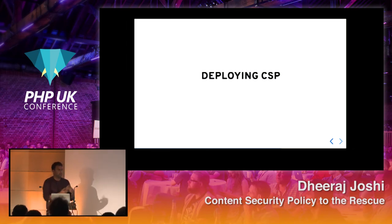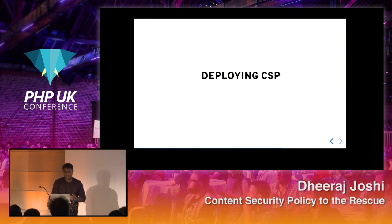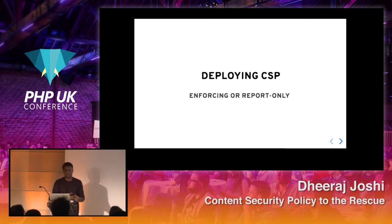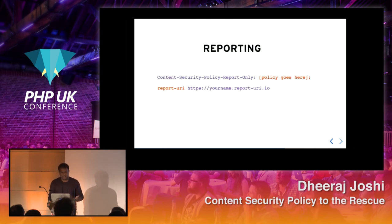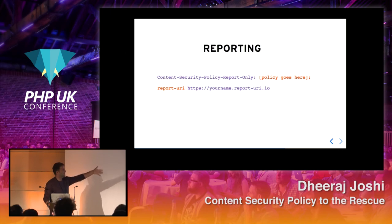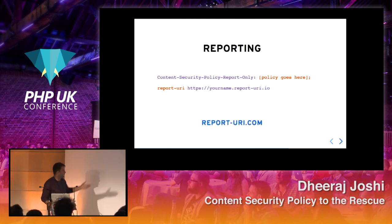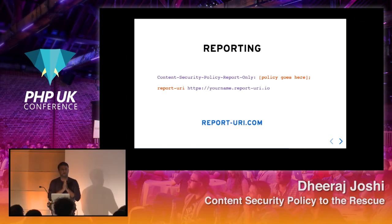Now that we understand how CSP works, how do we deploy it to production? There are two ways: the first is to enforce it — blocking and reporting attacks; the second is report-only, which allows reporting violations to a specific reporting server without blocking. You can use the header 'Content-Security-Policy-Report-Only' and specify a reporting URL. For this you can use reporturi.com, which makes it easy to maintain and get a complete idea about the logs.